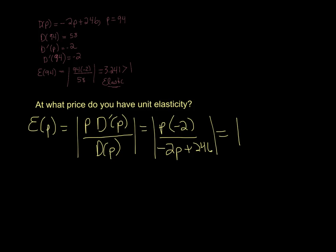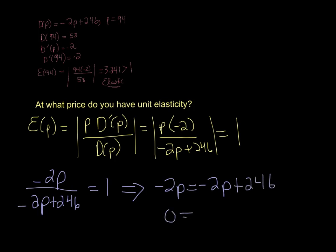Alright, so what we have is negative 2p over negative 2p plus 246 equals 1. And we're going to drop the absolute value here, because all that would change would be 1 set equal to 1 or 1 to negative 1, but we don't want the 1 equal to negative 1. We just want positive 1. And then if you multiply both sides by negative 2p plus 246, you would get negative 2p equals negative 2p plus 246. Add the 2p over, and we get 0 equals 246. Well, 0 doesn't actually equal 246. So there's no solution to this one.